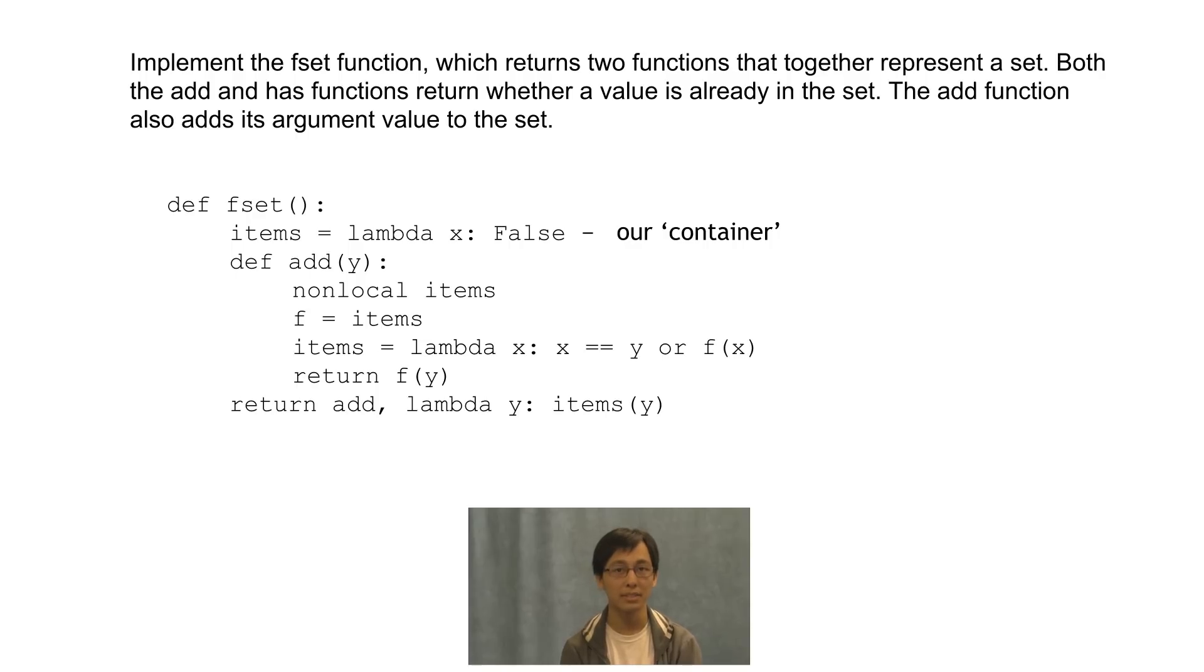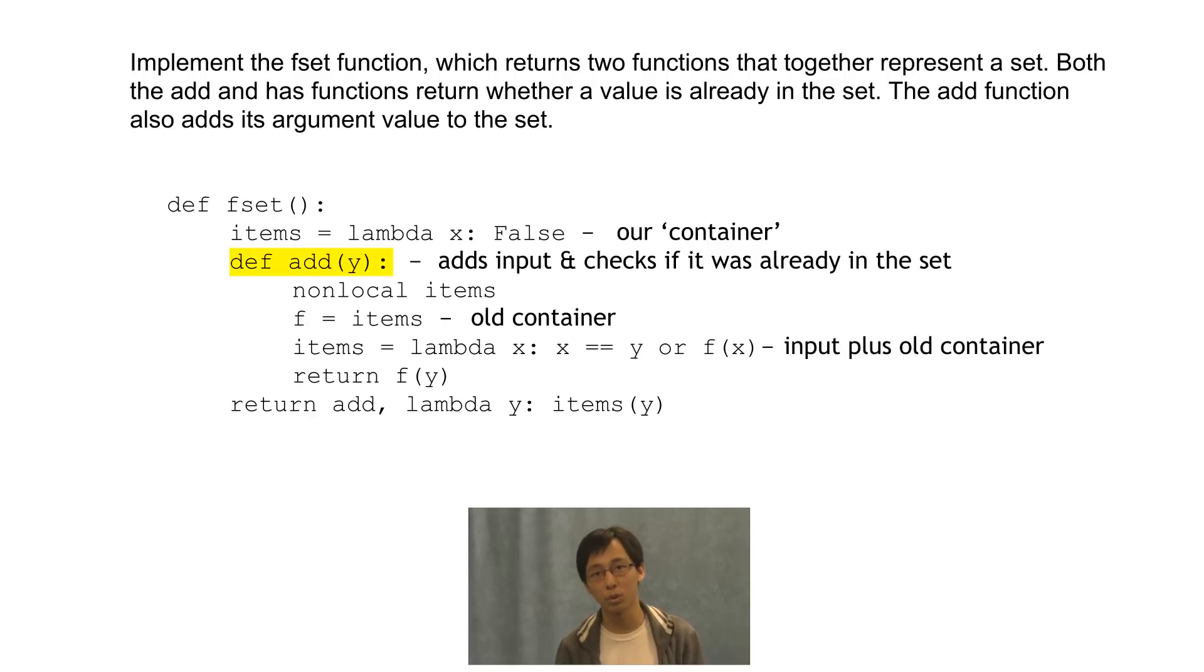Remember what I said earlier about sets being defined as functions? That concept comes up here. Since this is the function which adds a value, from our understanding of sets as functions, it'll be a set that checks if the input is the added value or any values added before it. And since f is the items that we have so far, that's why this new lambda function is lambda x, x equals y, or f of x. Now we've truly added to items because it contains our new value and all values it had before.